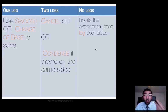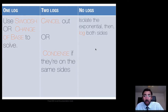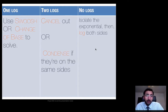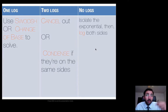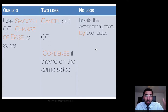Whenever we only see one log in a problem, we're either going to swoosh — meaning we're going to change that log to an exponential — or we're going to do a change of base, and then solve for x. If we have two logs, one on each side, then we're going to cancel them out using the one-to-one property so they both get cancelled, and we're left with the remaining numbers. Or we condense them to get them on one side and then solve.